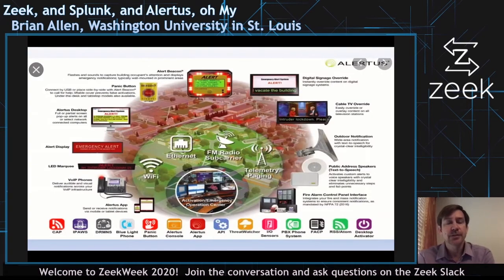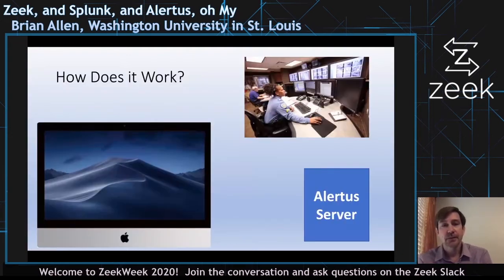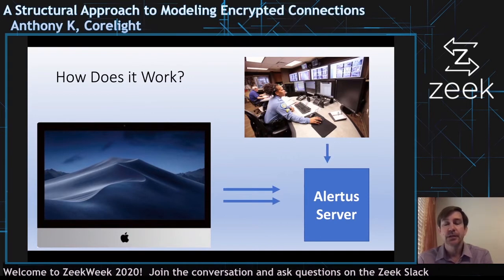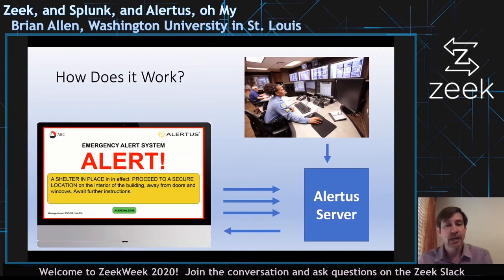So Alertus communicates via beacons, and a lot of the traffic is generated by Alertus desktop clients pushed on everybody's machines. There are also digital signs in hallways, cable TV override, and speakers outside — great for tornadoes or other emergencies. Here's how it works at a high level: a desktop in the lab phones home asking, 'You got a message for me?' The server says no. Then the police department posts an emergency message, the desktop checks in again, gets the message, and all the screens in the lab light up with the emergency. So it phones home, and let's take a look at that traffic.